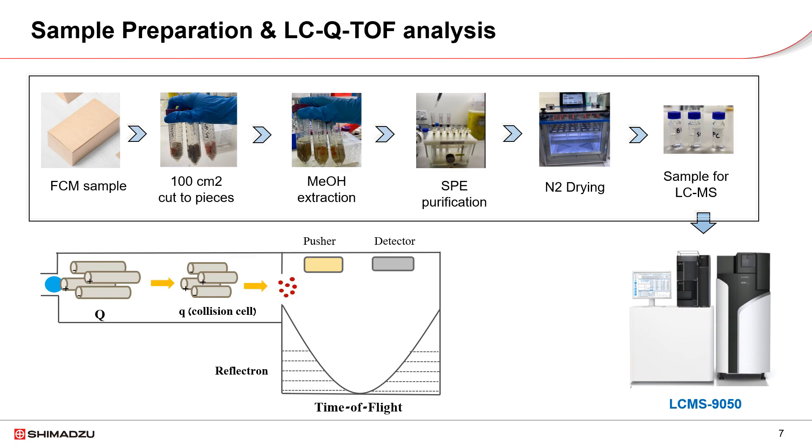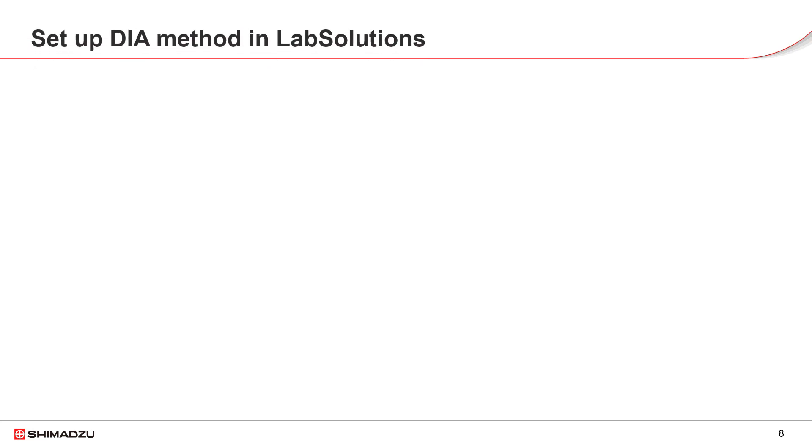The LC-MS-9050 is a Q-TOF, high-resolution accuracy mass system. The system is suitable for non-targeted screening analysis for PFAS.